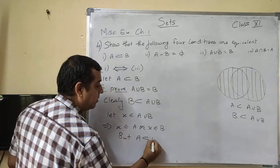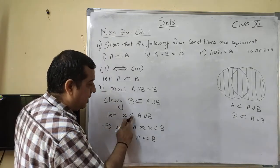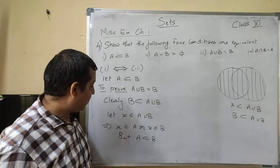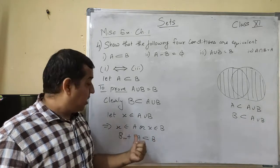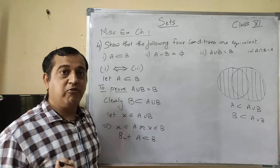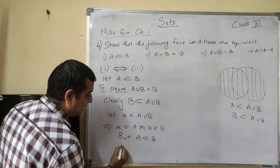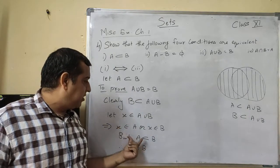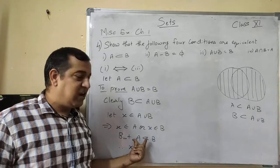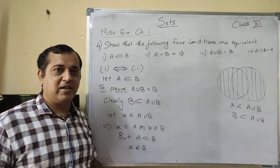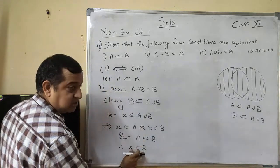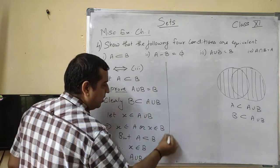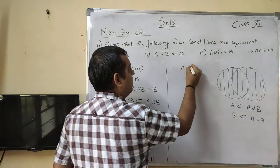A क्या है? Subset of B. अब ज़रा इन दो lines को ध्यान से देखिए. X जो था वो A में present है या X B में present है — या तो X A में present है या X B में present है. लेकिन A already B का subset है. तो ये statement देखकर हम क्या कर सकते हैं? Therefore, X सीधे-सीधे B में present है. अगर हम कहते हैं X A में present है, तो A क्या है? B का subset है — मतलब A का हर element B में present आएगा. तो अगर X A में present है, तो भी वहाँ से X B में present है. हमने लिया X ∈ A ∪ B, we are getting X ∈ B. Therefore, A ∪ B is subset of B.